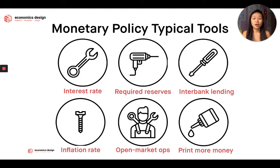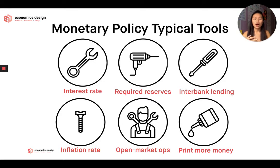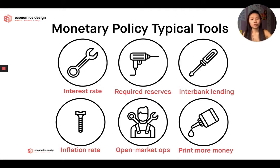We also have open market operations, where you allow other people to come in by selling government bonds. Government bonds are how government borrows money from people. The government then has more money and can use it to put back into the economy. That's open market operations. If they want contractionary policies, then they can sell the bonds.